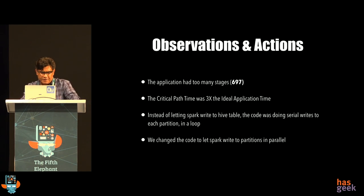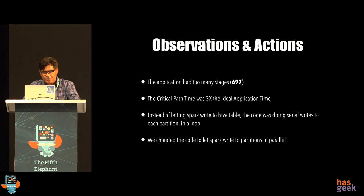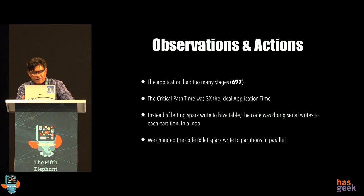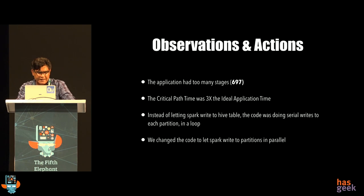We started looking at the results and found that this application had too many stages — almost 700. Typically when profiling applications, I've seen 30, 40, 50 as a usual number; 700 is very large. One thought was there could be some sort of loop going on. We looked at the code and found there was a write happening to a Hive table — instead of writing in a parallel manner, the code was filtering by each partition and doing a write one partition at a time. Spark is designed to write to all partitions in parallel, so we changed a couple of lines of code.